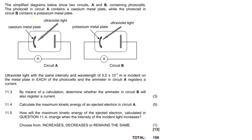Moving on. Then I'll say that the simplified diagrams below show two circuits A and B containing photocells. And the photocell in circuit A contains a caesium metal plate, while the photocell in circuit B contains a potassium metal plate. Both of these photocells are irradiated with ultraviolet light. So that's the same in both these experiments. We have different metals, which means that each of them will have their own work function and threshold frequency.